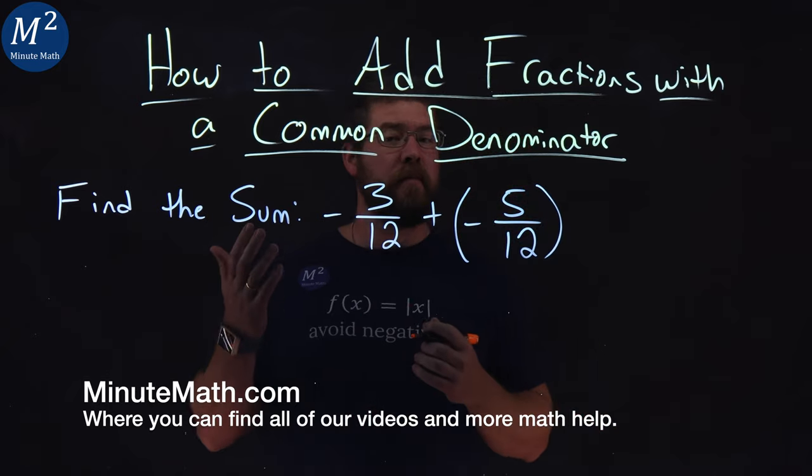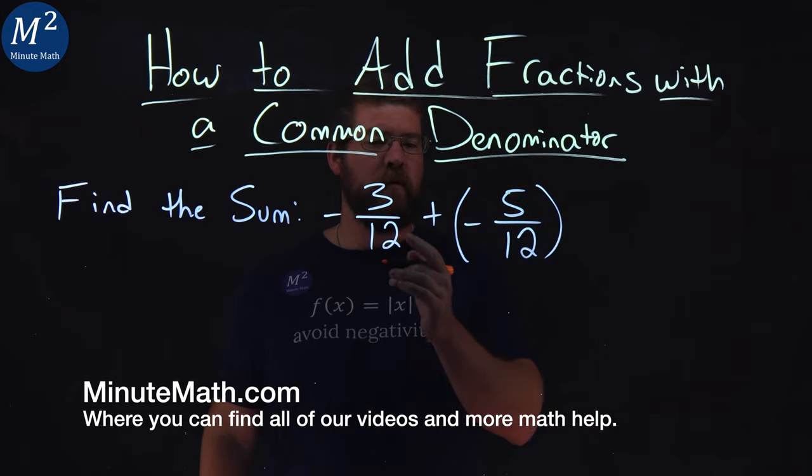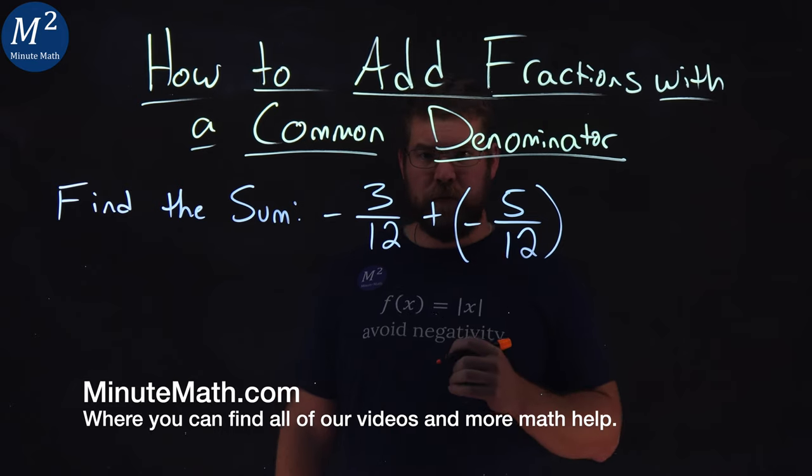We're given this problem right here. Find the sum of negative 3 over 12 plus a negative 5 over 12. Okay.